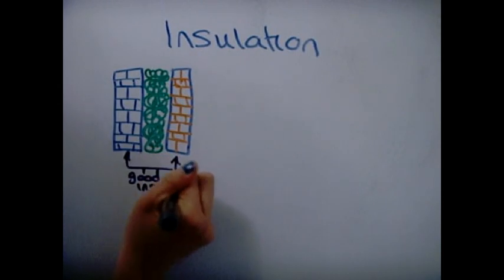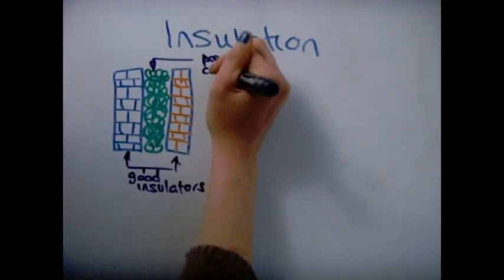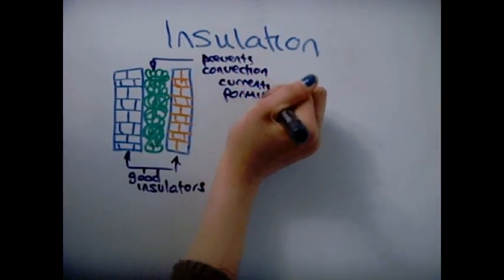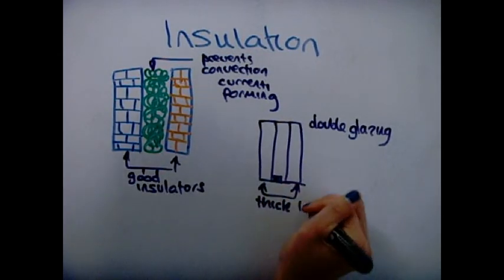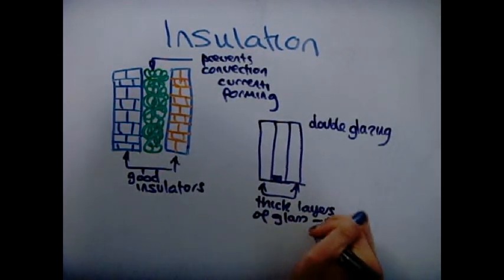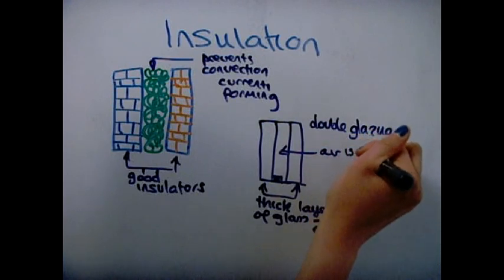Insulation is used to reduce heat transfer. Walls are insulated to prevent convection currents from forming, and they are made out of poor conductors of heat. This principle also applies to double glazing.